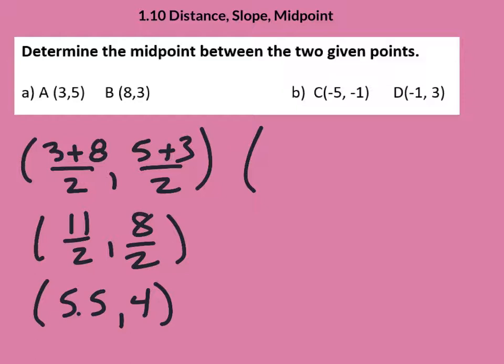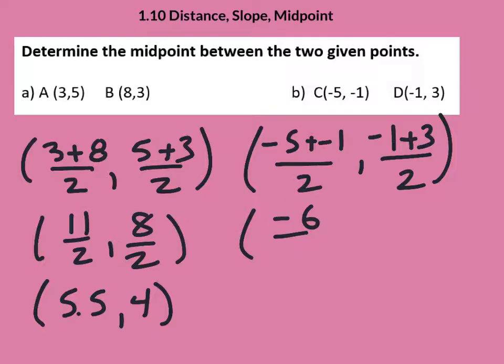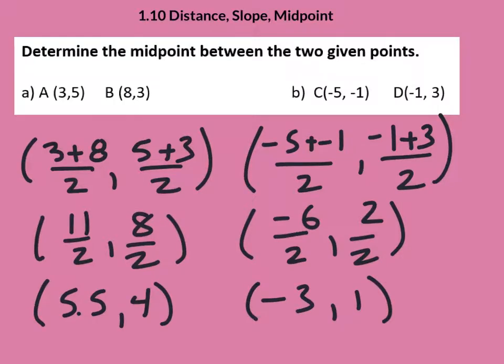Over here, we would do negative five added to negative one, divide by two. Negative one and three, divide by two. That would be negative six divided by two. This would be two divided by two. And our final answer would be this. Midpoint's quite simple.